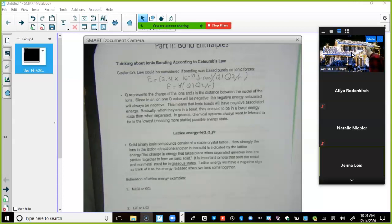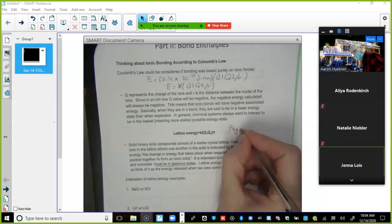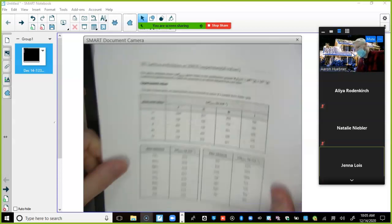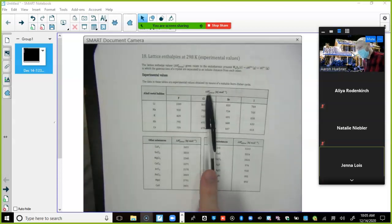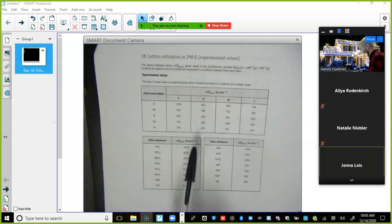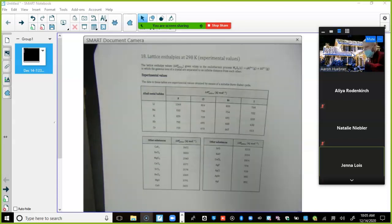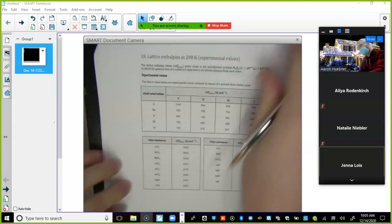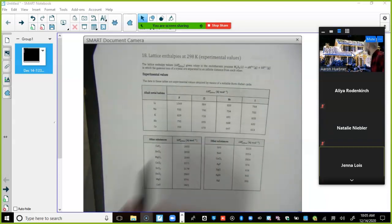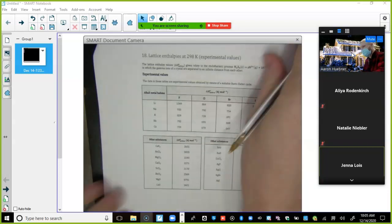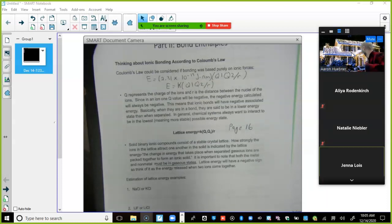I'm going to underline that, gaseous states, that's going to come back from Born-Haber. Because if they're not in gaseous states then we can't calculate their enthalpy or their lattice energy. Lattice energy will have a negative sign, so think of it as the energy released when two ions come together. But this is where it's confusing, I want to address this right now. In the data booklet, let's just figure out what page this is on. Lattice enthalpy, hop right into it, page 16.